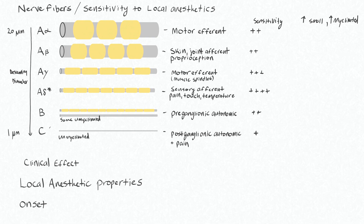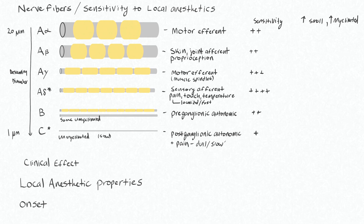The A delta fibers and C fibers are principally our nociception nerve fibers. The A delta fibers are your sensory afferents for pain, touch, and temperature, and this pain tends to be localized or fast-transmitted pain. Because these are myelinated, they're able to have much faster nerve conduction via saltatory conduction — they give you information about directly where sensation is coming from, that sort of sharp pain. Your C fibers, being unmyelinated and therefore slow, tend to carry dull and slow pain information.